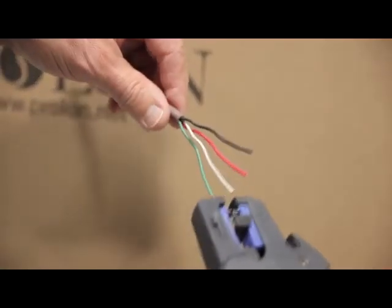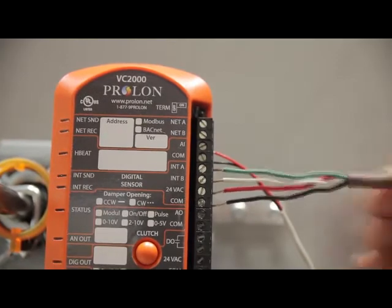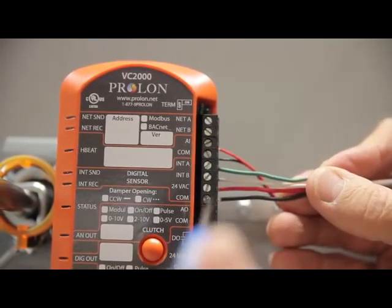Using a four conductor cable, connect the digital wall sensor to the controller. All Prolon digital wall sensors have identical wiring terminals so they all hook up the same way.